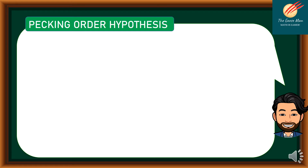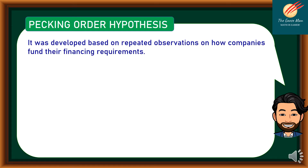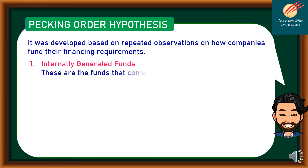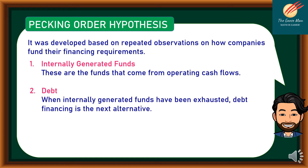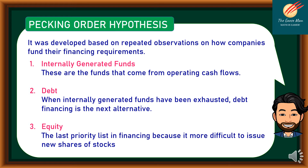Let's discuss briefly the pecking order hypothesis. It was developed based on repeated observation of how companies fund their financing requirements. The order is: first, internally generated funds — these are funds that come from operating cash flows; second, debt — when internally generated funds have been exhausted, debt financing is the next alternative; and finally, equity, which is the last resort, because it is more difficult to issue new shares of stocks.